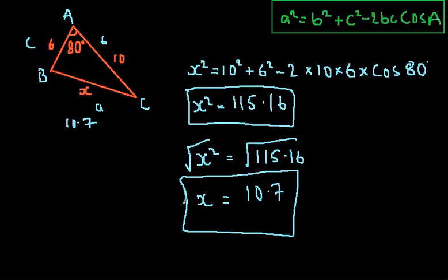And, that's how easy the cosine rule is to work out the length. So I'm going to do an example now to work out an angle. So, let's get familiar with the formula to work out the angle with the cosine rule.